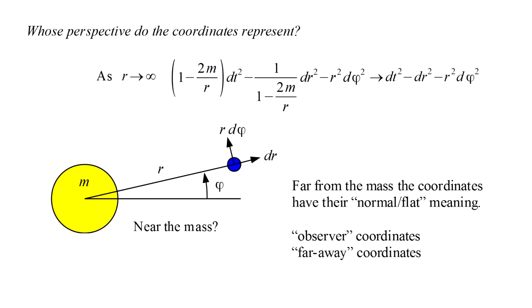Schwarzschild's solution forces us to confront the concept of a singularity. A singularity is where a mathematical expression breaks down, typically because some term becomes infinite. Assuming no real physical property can be infinite, this is usually taken to indicate a failure of the corresponding theory.